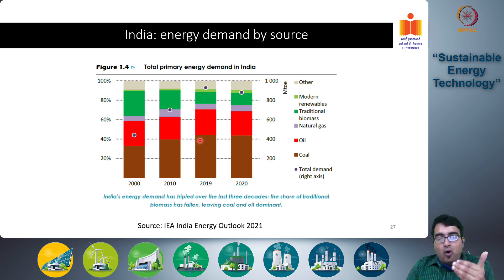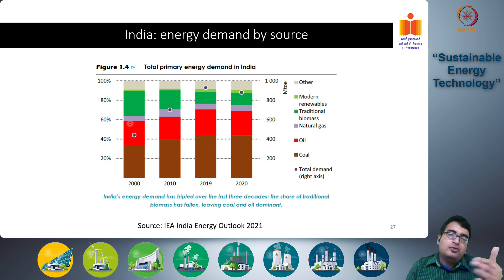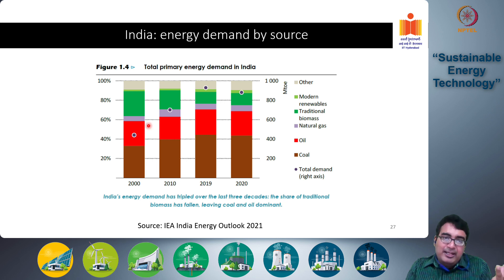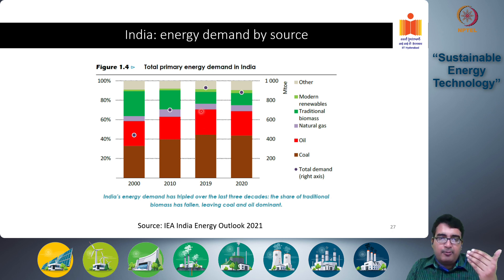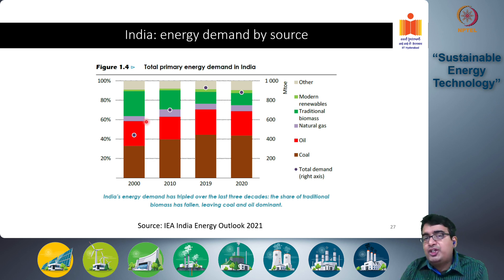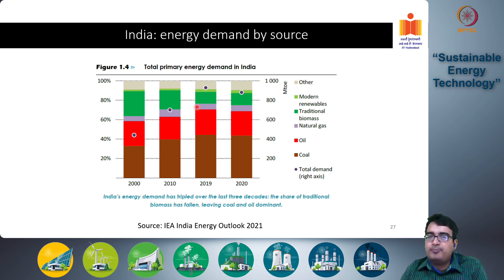Oil is the next major source, accounting for around 25 to 30 percent of total energy demand — a similar share in both 2010 and 2019, though the absolute amount has increased. Natural gas in India is quite a minor player; its fraction has increased somewhat from around five percent to around seven to eight percent, but it remains a minor contributor in Indian energy markets today.